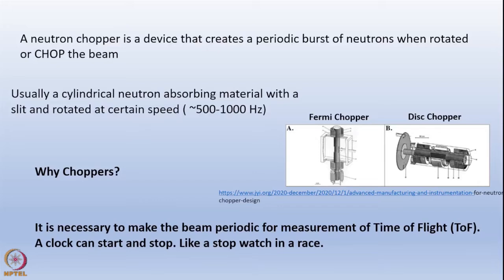In the case of a reactor with a continuous beam, the chopper only allows one pulse per rotation; the rest of the time the neutron beam is present but we are not allowing it to pass through. So we lose neutrons - it is poor for neutron economy. But for some experiments we can sacrifice neutron economy and use time-of-flight in reactors.